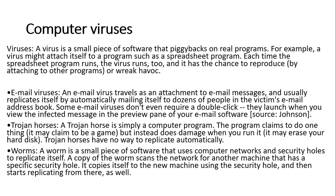A computer virus is parasitic software that piggybacks on a real program. A virus can attach itself to a program such as a spreadsheet, and each time the spreadsheet runs, the virus runs too. It can reproduce and attach itself to other programs. Types of viruses include email viruses, Trojan horses, and worms. Worms usually attack computer networks. Trojan horses can attack and destroy computer hardware. Email viruses travel as attachments with emails.